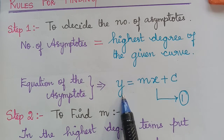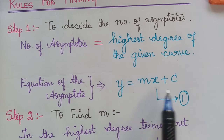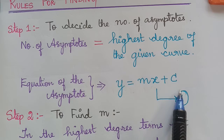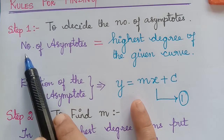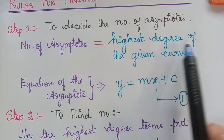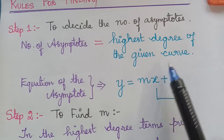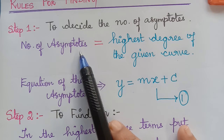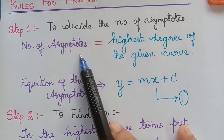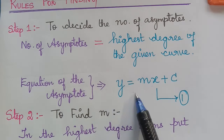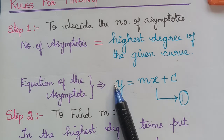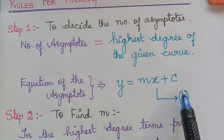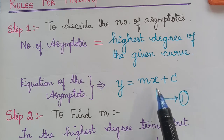Because we are dealing with linear asymptotes, the asymptotes are straight lines and the equation of the asymptote is y = mx + c. The number of asymptotes will be equal to the highest degree of the curve. So if the degree of the curve is 3, 4, or 5, then the number of asymptotes will be respectively 3, 4, and 5. If we have 3 asymptotes, there will be 3 equations: y = m₁x + c₁, y = m₂x + c₂, and y = m₃x + c₃.